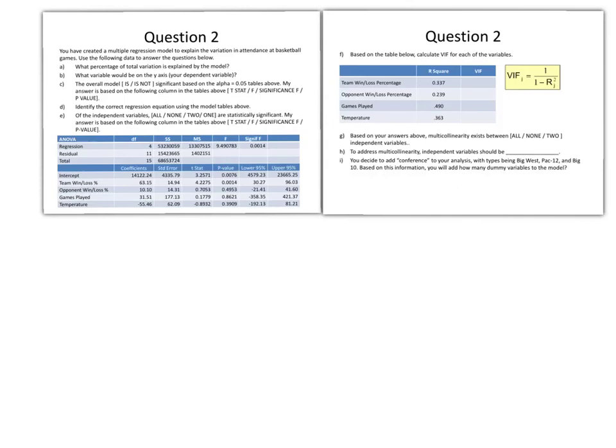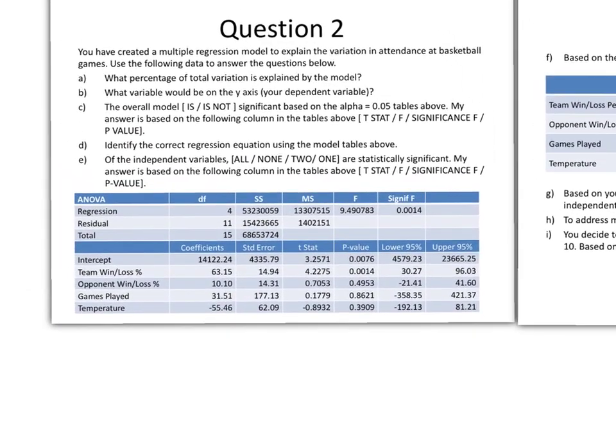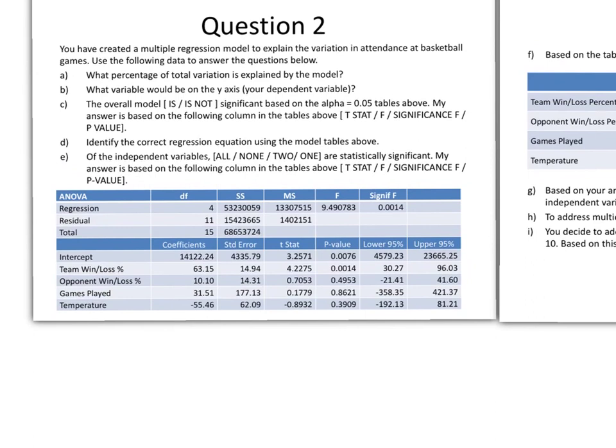Problem 2 on the practice exam is a multiple linear regression problem. We'll start by zooming in on this first part of the problem. We've got a multiple linear regression model looking to explain the variation in attendance at basketball games, and we've got some data here in our table.